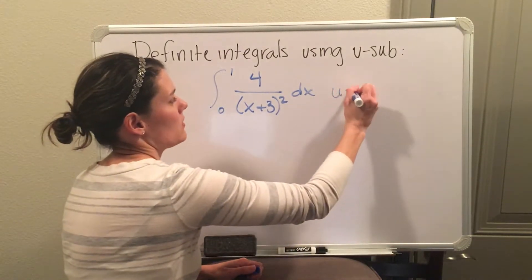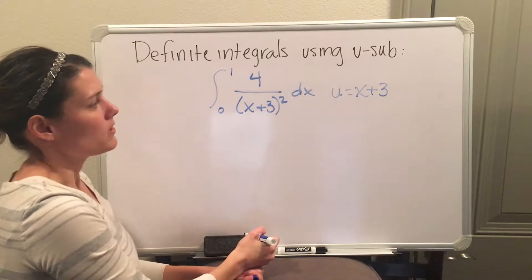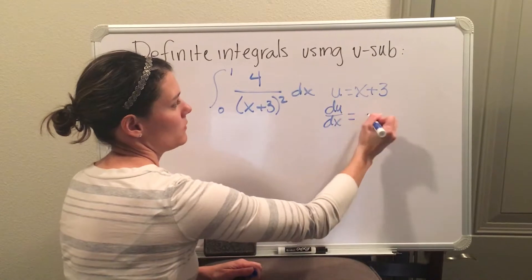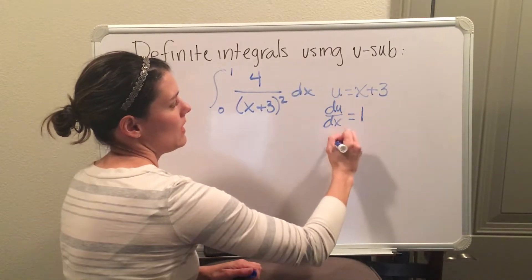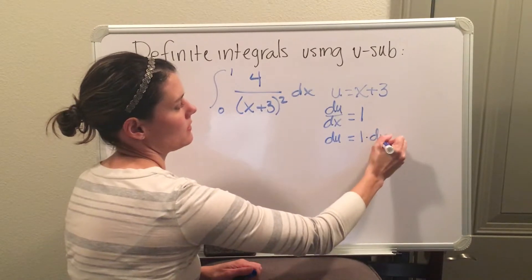So my u is going to be x plus 3. What you do next is you're going to take the derivative of this u in terms of x, which would be 1, and then I'm going to multiply the dx over to the other side.